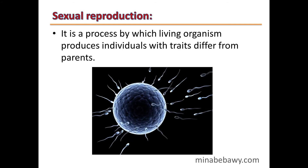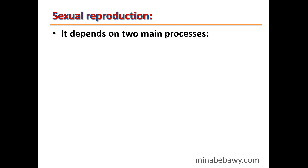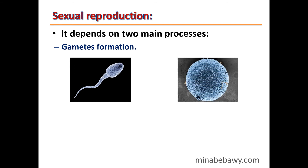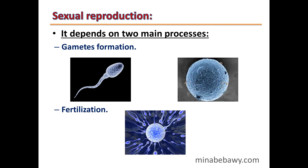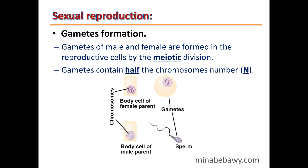Sexual reproduction is a process by which living organisms produce individuals with traits that differ from the parents. It depends on two main processes: the first is gamete formation, and the second is fertilization. Gametes of male and female are formed in their reproductive cells by meiotic division (meiosis), so they contain only half the number of chromosomes — they are haploid (N).